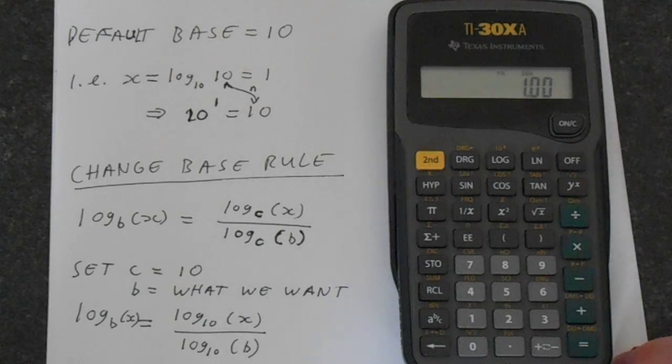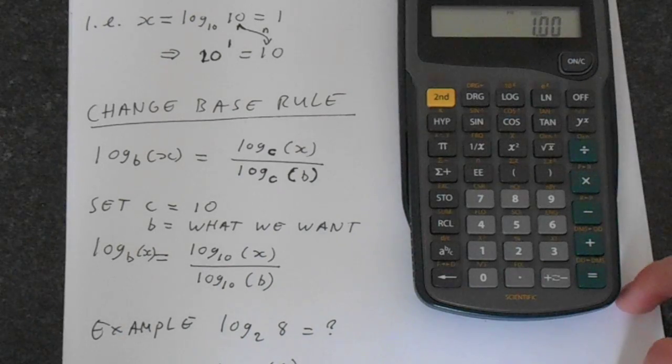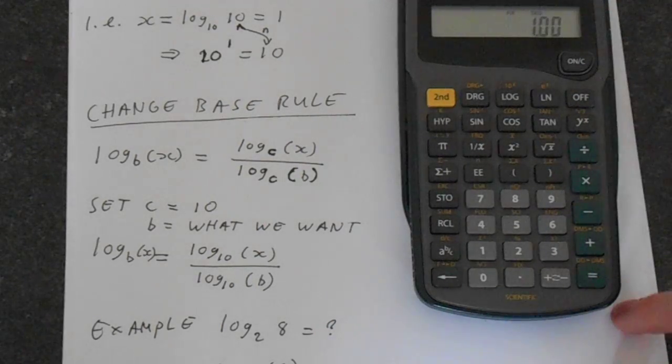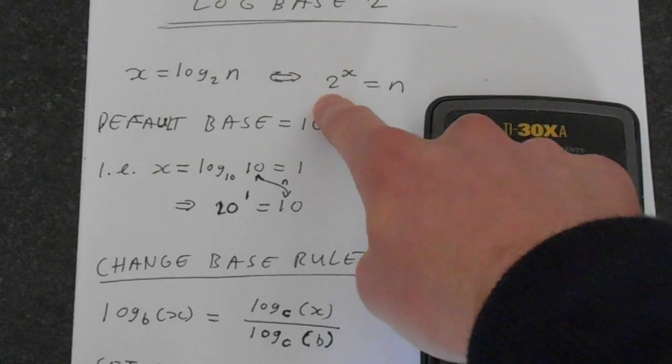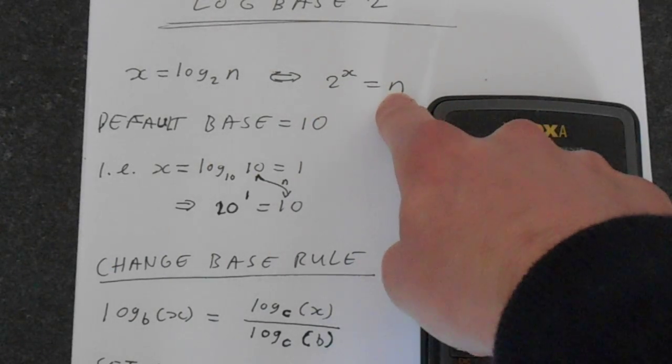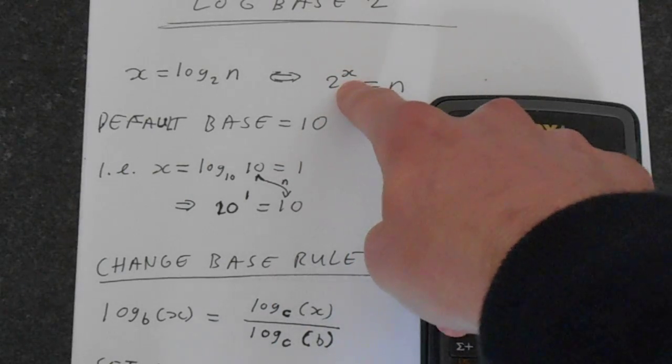Let's find log 2 of 8. It should be immediately obvious to you that this is of course going to be 3. So n is 8 and the base is 2. So really we're solving this: 2 to what power equals 8? Well 2 cubed is 8. And so we've got cubed here, so x is going to be 3.